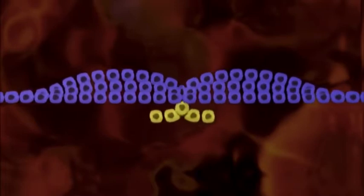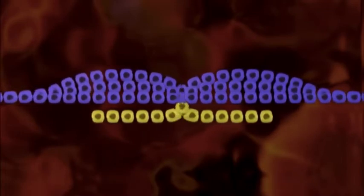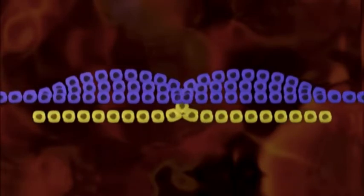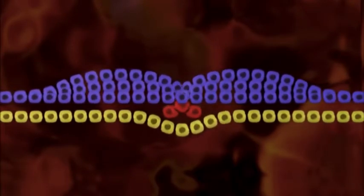At the beginning of gastrulation, some cells begin moving toward the center. Then they dive downwards, creating a new lower layer. More cells plunge through, squeezing in between, forming a third.